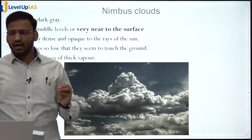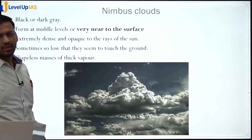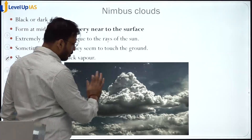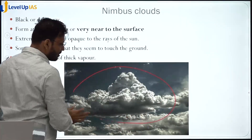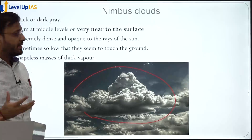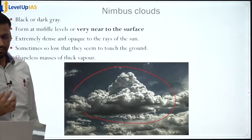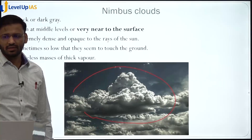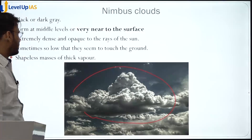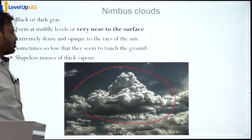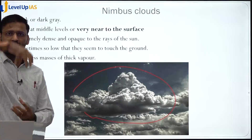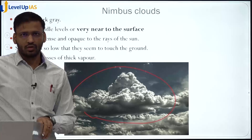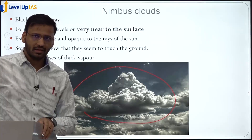The closest cloud to the surface of the earth is the nimbus cloud. These are huge clouds, black or gray in color — very dark clouds. They give the highest rainfall among the four types. They are not at all transparent to sun rays; they reflect sun rays. They are very dense clouds with notable vertical development.